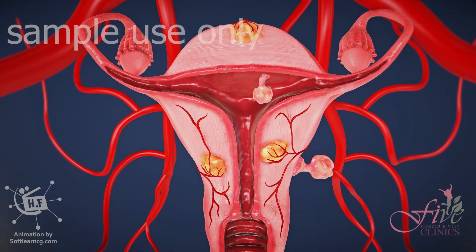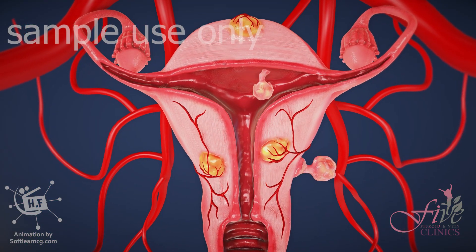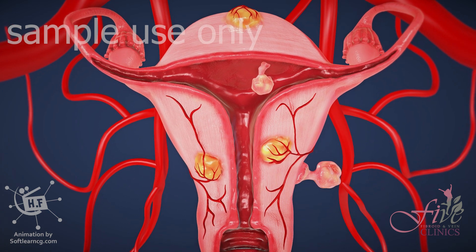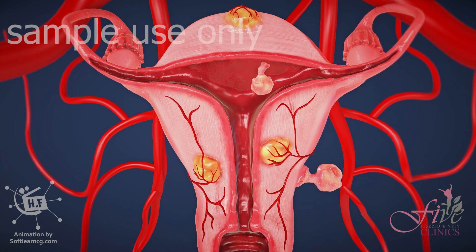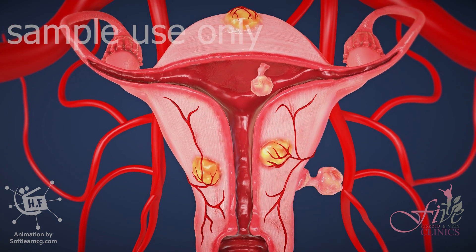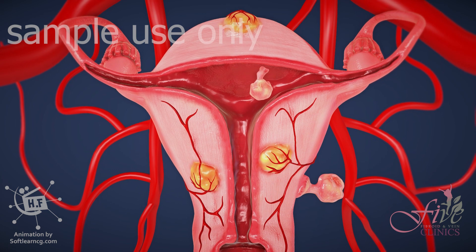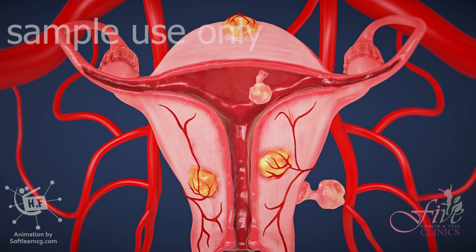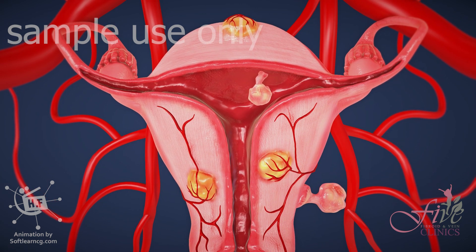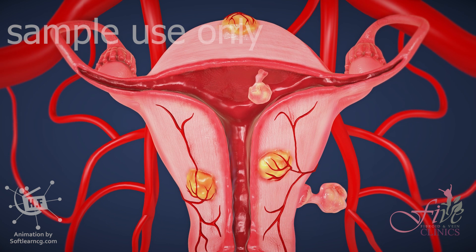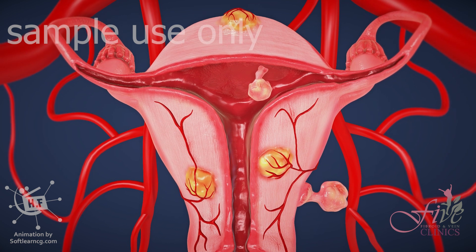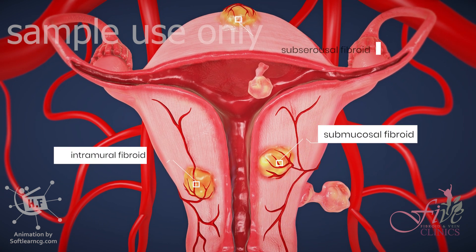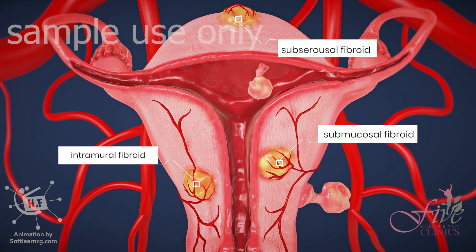Fibroids are the most common benign tumors found in females. They are composed of smooth muscle cells and fibrous connective tissue arising from the muscular layer of the uterus. Fibroids are highly variable in size and are classified based on their location: submucosal, intramural, and subserosal.